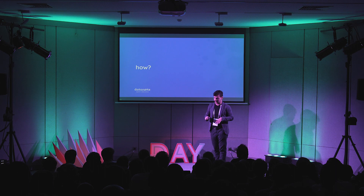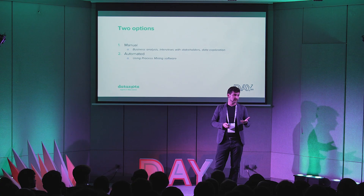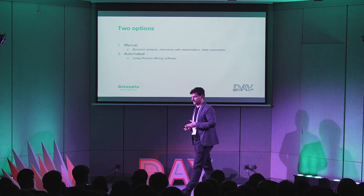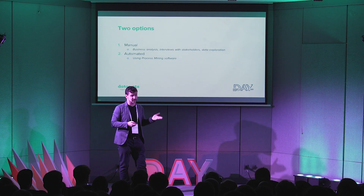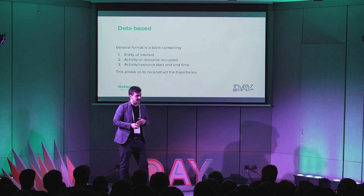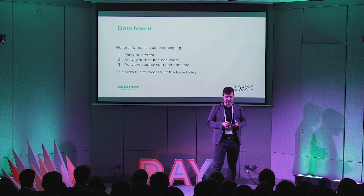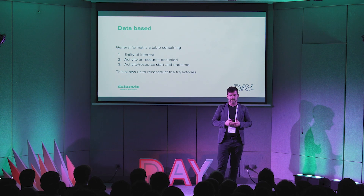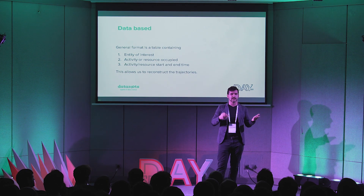Now let's see how you can do this in practice. The first thing is to discover your process, and as with everything, there's often a big discrepancy between your first ideas and reality. There are two ways: the manual footwork approach — sitting down with stakeholders, mapping the process out and implementing it — or an automated approach using software tools. For the automated approach, you need data in a general format: what is happening when, who is doing what when, using what resources. It's basically a table.